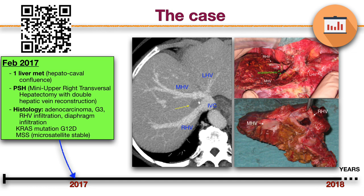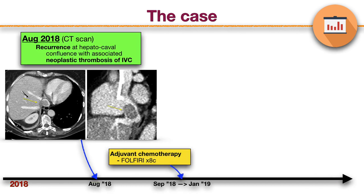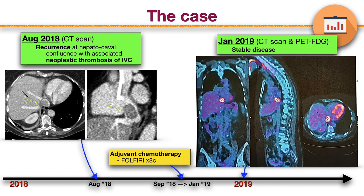This lesion was treated with parenchyma-sparing surgery and reconstruction of the right and middle hepatic veins. One year later, a solid lesion appeared originating from the IVC wall and protruding inside the right atrium. After eight cycles of chemotherapy, a PET scan documented the stability of the disease.